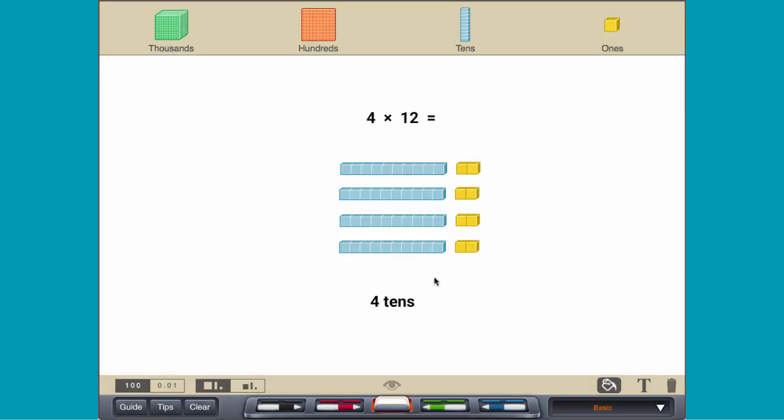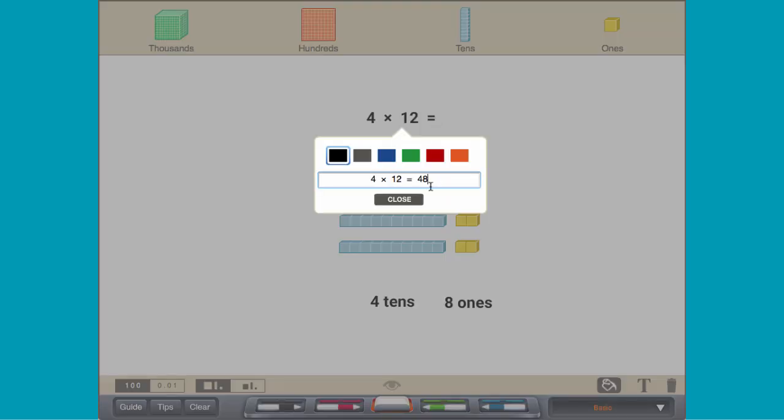There are 4 tens and 8 ones in total, so 4 times 12 equals 48.